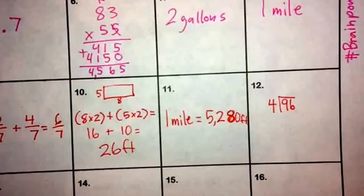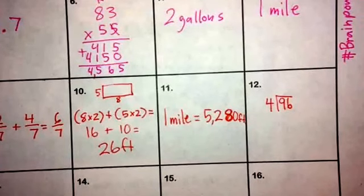Alright, number 11. They asked you how many feet are in a mile, and that's just one of those, either you know it or you don't. And to be honest, Mr. Webb had to look this one up. But 1 mile equals 5,280 feet.